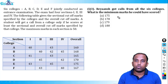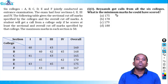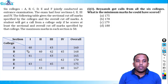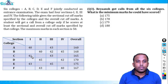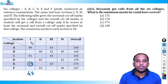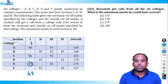Third question: Rayansh got calls from all six colleges. What is the minimum marks he could have scored? Since he has to clear the cutoff in all sections for all colleges, in section 1 he must get the maximum cutoff across all colleges, which is 43 marks. Scoring 43 in section 1 ensures he gets calls from all colleges requiring a section 1 cutoff.